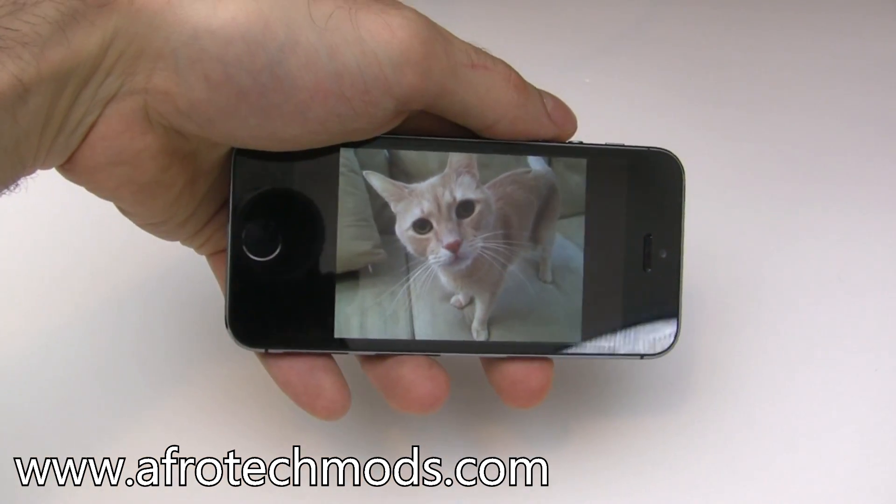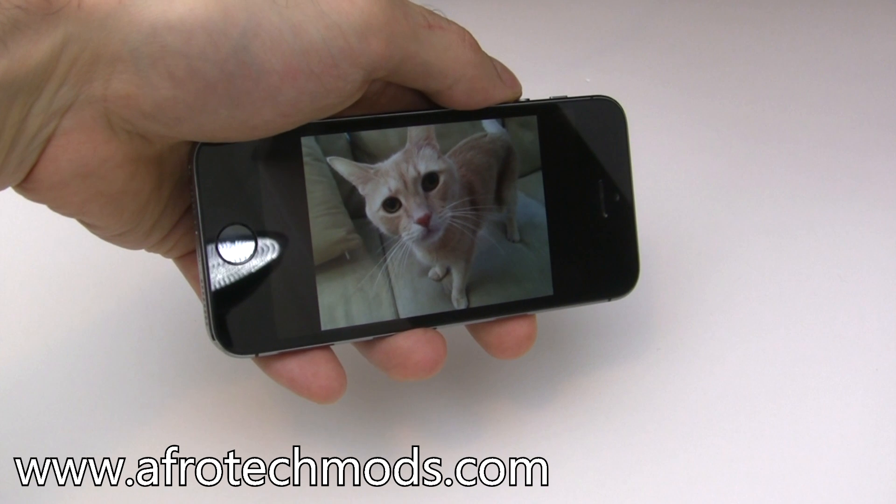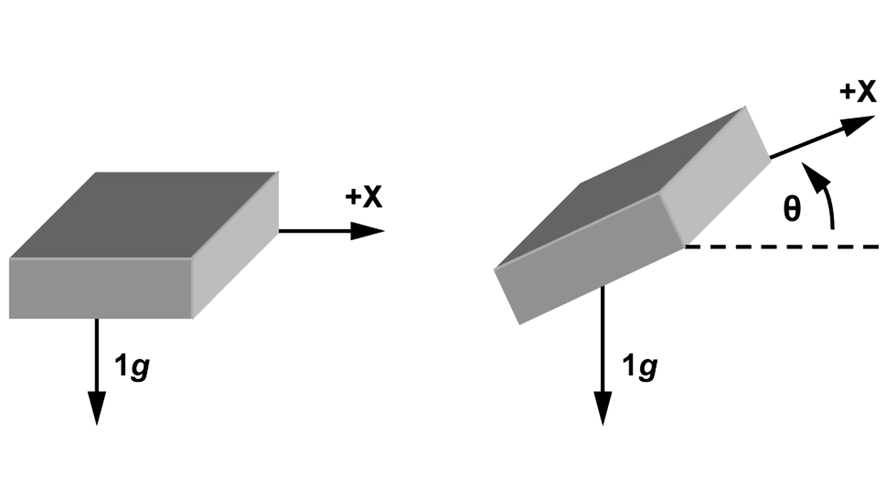Have you ever wondered how your phone manages to know what direction you're holding it? It's using a device called an accelerometer. It works by sensing the acceleration of gravity, and then you can calculate what direction the phone is facing.